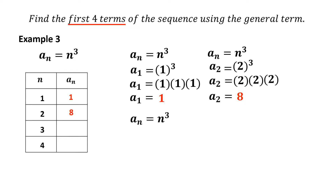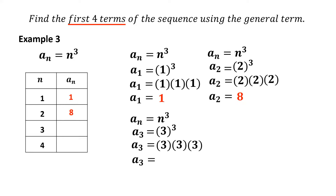Finding the third term using a sub n equals n cubed. Substitute n equals 3: a sub 3 equals 3 cubed, meaning 3 times 3 times 3, which equals 27. Therefore, the third term of the sequence is 27.